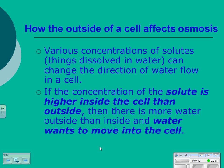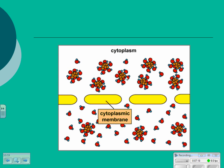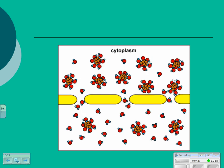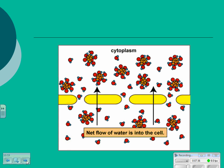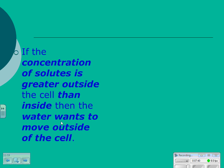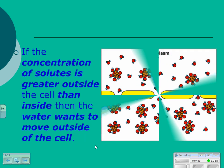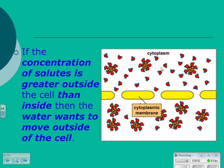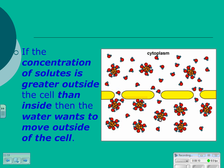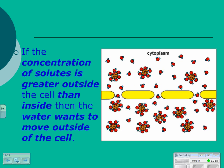The cell could ultimately burst if it can't control it. We have cytoplasm inside the cell with a higher concentration of solute and higher concentration of water outside than inside, so water moves into the cell through the membrane. If the concentration of solutes is greater outside the cell than inside — like adding salt outside — then water wants to leave the cell and move outside, causing the cell to shrink. There is a net movement of water outside the cell.